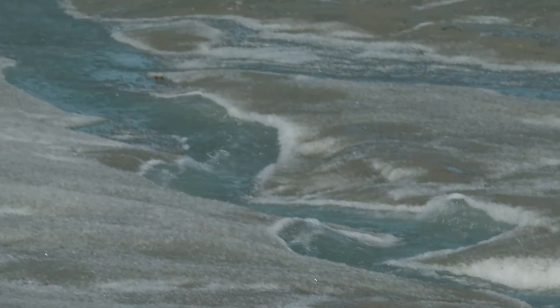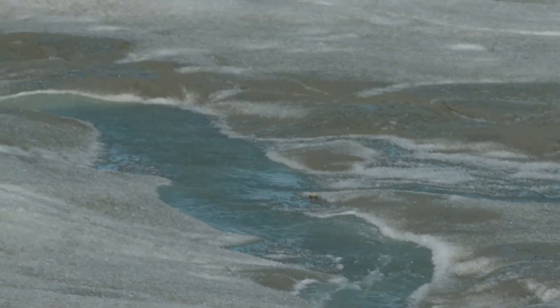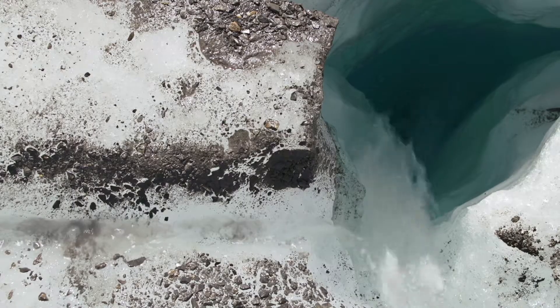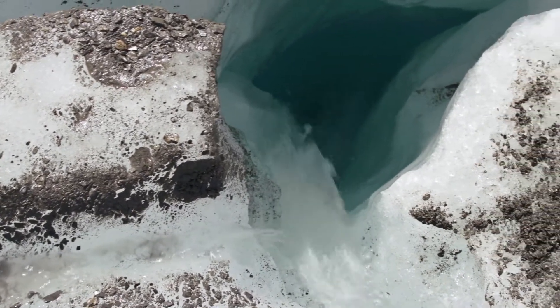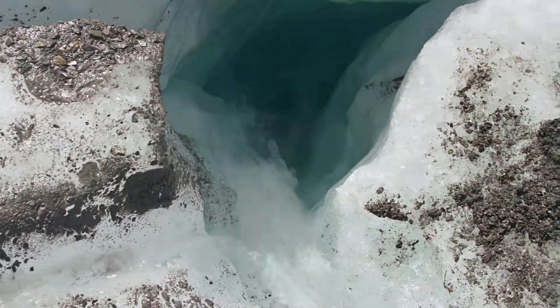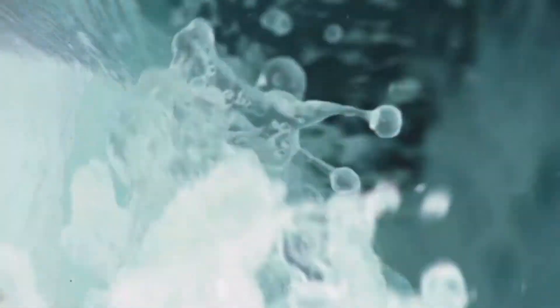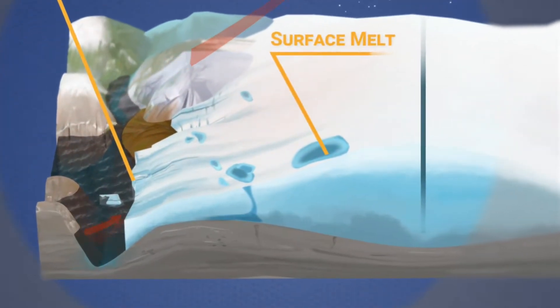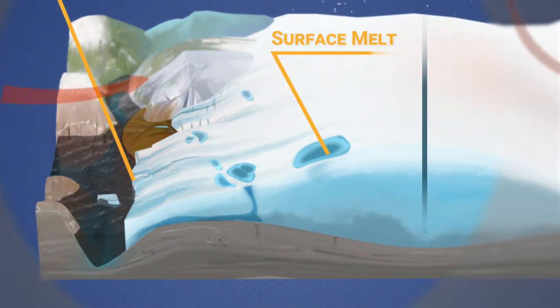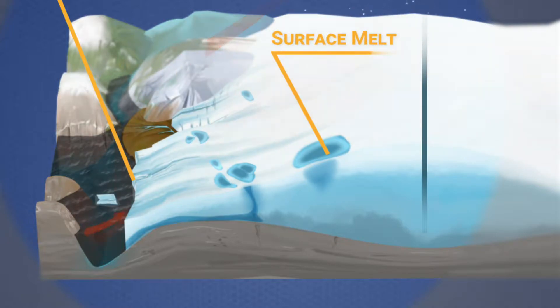Surface water on the Greenland Ice Sheet only flows a small distance on the surface. It eventually will reach a crevasse or a moulin, which is a large vertical conduit named after the windmill in French, because it makes a large whooshing sound whenever water goes in. They act to drain large volumes of water — almost all of the surface melt that occurs on the ice sheet — to the bed of the ice sheet.